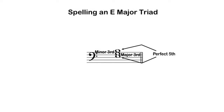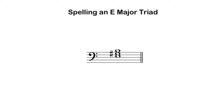I can use that to double-check my spelling of the thirds along the way. A major third above an E is a G sharp. You may want to refer to my video on spelling intervals if you need help remembering how to do this quickly. A minor third above G sharp is a B. To double check, I want to make sure that B is a perfect fifth above E, and sure enough, it is.